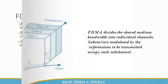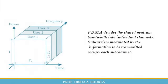Moving further, this time versus frequency and power graph displays that the time is constant but the frequency is divided among different users. FDMA divides the shared medium bandwidth into individual channels, and the sub-carriers modulated by the information to be transmitted occupy each sub-channel.